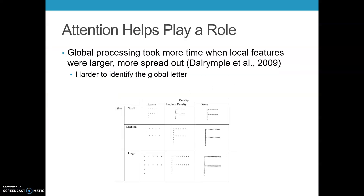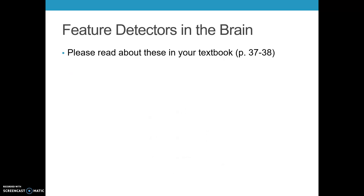Let's keep talking about evidence of feature theories. Some additional evidence relates to the fact that we have areas of our brain, cells and networks, that are designed to respond to different features such as movement and certain lines of orientation. Please make sure you read about these in your textbook on pages 37 through 38.